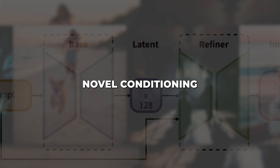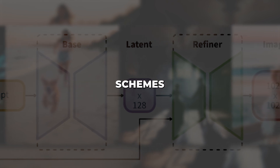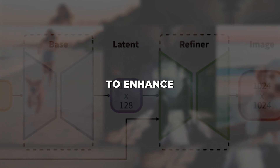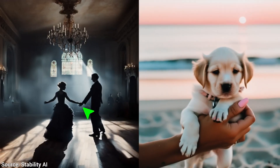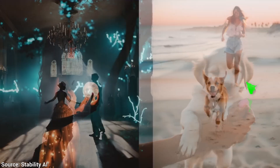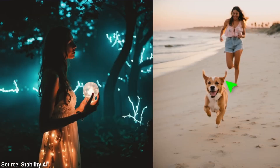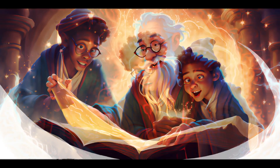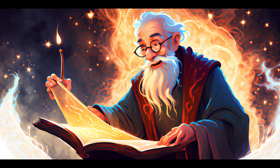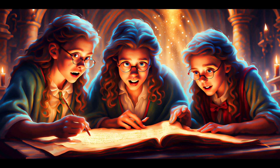SDXL incorporates novel conditioning schemes and training techniques to enhance the compositionality of generated images. What this means in simple terms is that SDXL is better at handling prompts that describe complex scenes with multiple elements and figures. The AI has a stronger understanding of how to arrange generated objects in a sensible layout.